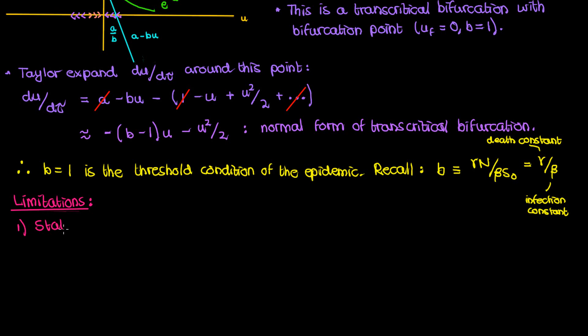For one we assume a static population that doesn't change except for the deaths caused by the disease. And another limitation is that we don't include a separate variable for the exposed patients who have the disease but can't spread it to others just yet. And in addition we don't have a variable for patients who have recovered.